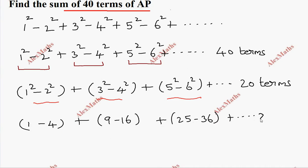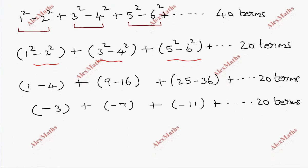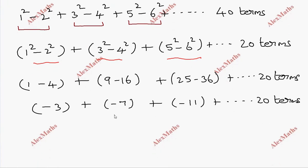Plus dot dot dot 20 terms. The sum: minus 3, minus 7, minus 11, so plus dot dot dot 20 terms. In the series, this is an AP, so I'll check.